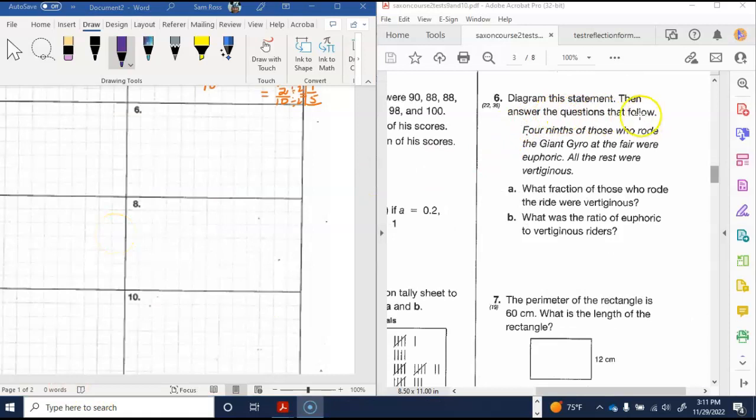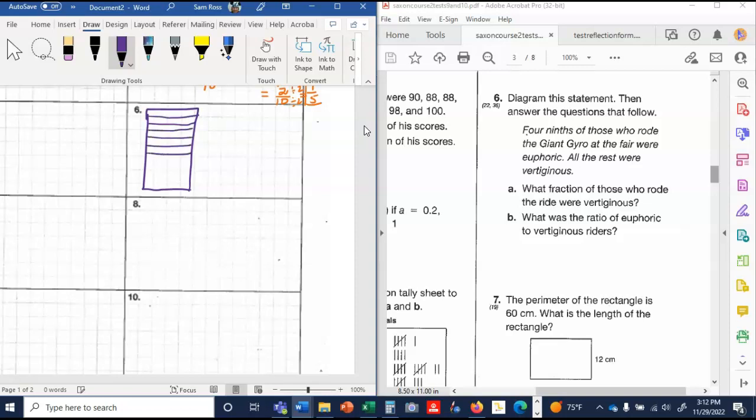Number six says diagram the statement and answer the questions that follow. Four ninths of those who rode the giant gyro at the fair were euphoric or very happy. All the rest were vertiginous or they wanted to throw up. So what I'm going to do is the four ninths tells me I need nine squares. So one, two, three, four, five, six, seven, eight, and that would be nine. They should be the same size, but I can't draw. One, two, three, four. So those four ninths were euphoric. I'm just going to write an E. That means that five ninths were vertiginous because five ninths plus four ninths gives us nine, all nine of the ninths.